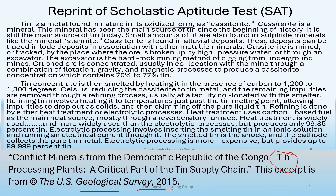Cassiterite is found in alluvial deposits. These deposits can be traced in low deposits in association with other metallic minerals. Cassiterite is mined or extracted by the place where the ore is broken up by high-pressure water or through an excavator. The excavator is a hard rock mining method of digging from the underground mines. Crushed ore is concentrated, usually co-located with the mine, through a combination of flotation, gravity, and magnetic processes to produce a cassiterite concentration which contains 70 to 77 percent tin.